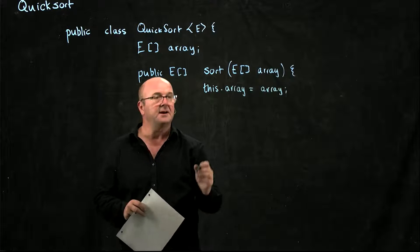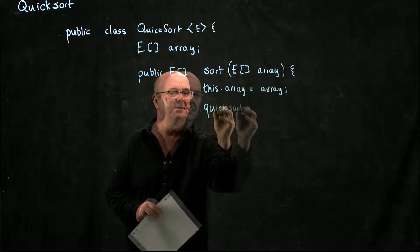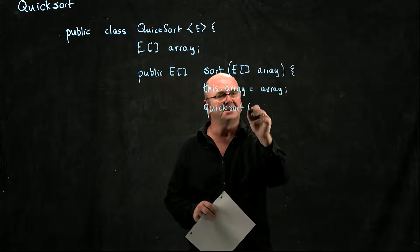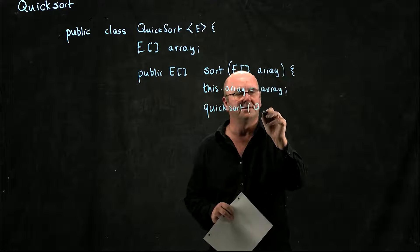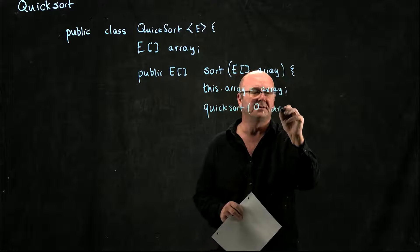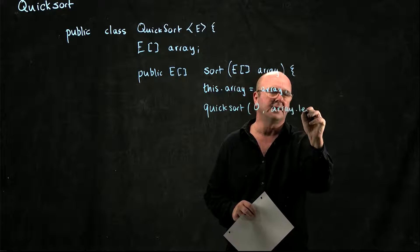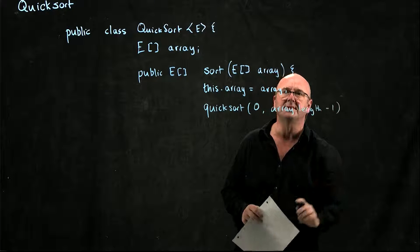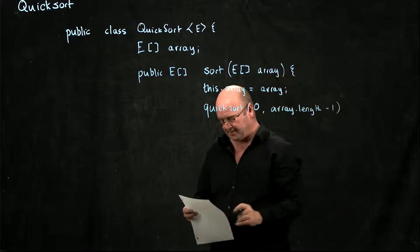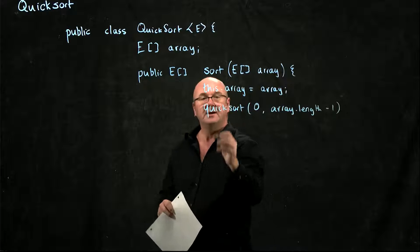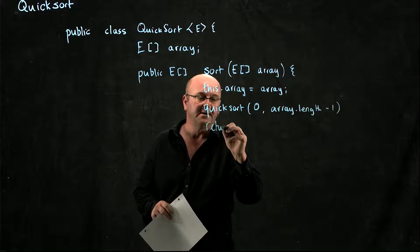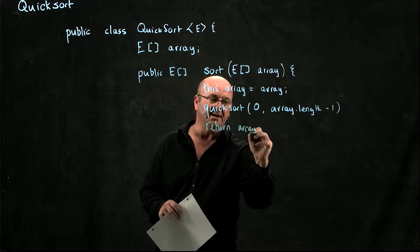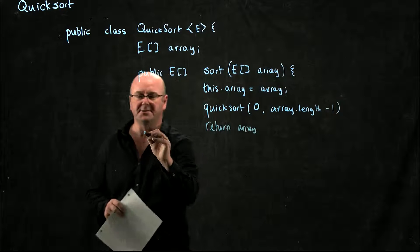And I'm going to do quicksort from 0 to array.length minus 1 — so the whole array. And when that's done, I'm going to return my array, my globally scoped array.